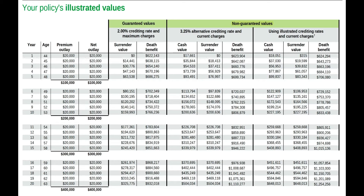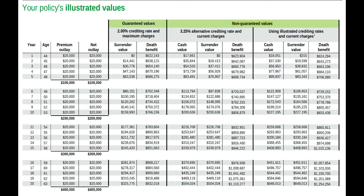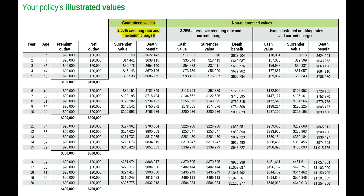The guaranteed values column is the legally required disclosure of a worst-case scenario — from policy inception, you will be credited the minimum interest, which is usually zero, for all policy years, and also be charged maximum charges. Securian, however, has a 2% crediting rate, which is kind of like a 2% floor. Of course, if there were actually zero interest for all policy years, the world economy would be going through some kind of Armageddon, and that is unlikely to happen.